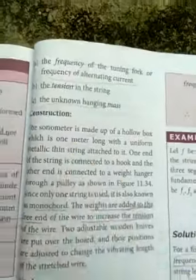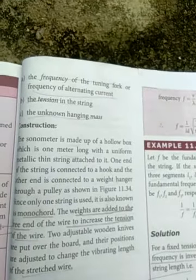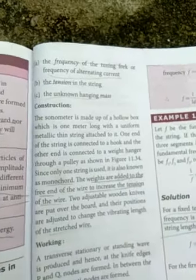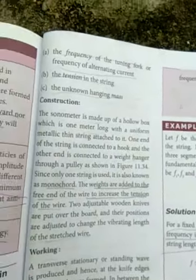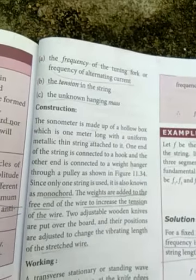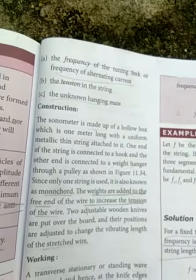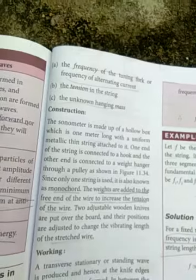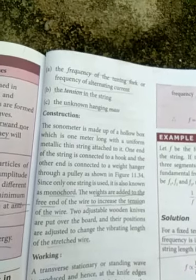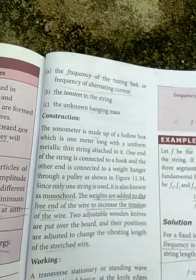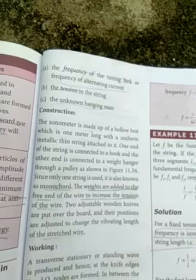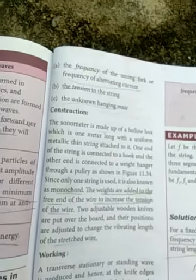You see construction. The sonometer is made up of the hollow box which is one meter long with the uniform metallic thin string attached to it. The hollow box is one long meter metallic thin string attached.